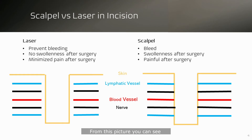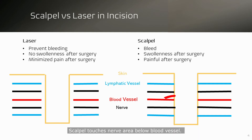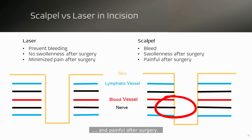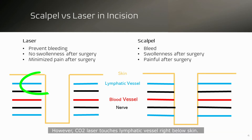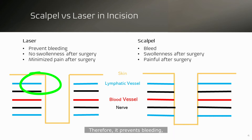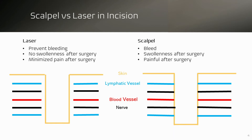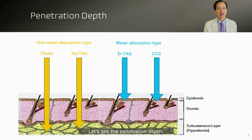From this picture, you can see the difference in incision between a scalpel and laser. A scalpel touches the nerve area below the blood vessel — that's why there is bleeding, swelling, and pain after surgery. However, CO2 laser touches lymphatic vessels right below the skin, which prevents bleeding and swelling after surgery and minimizes post-operative pain.